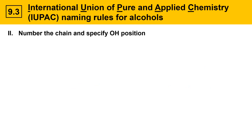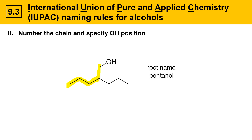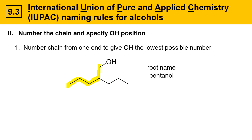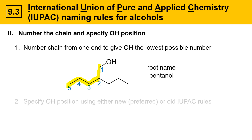The next step in naming an alcohol is to number the chain and specify the location of the OH group. Looking at our pentanol example, we have to number the chain from one end to give the OH group the lowest possible number. That numbering gives the OH group the lowest possible number of one.